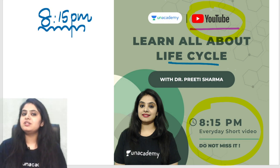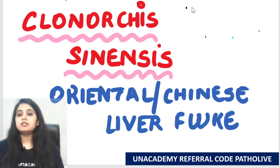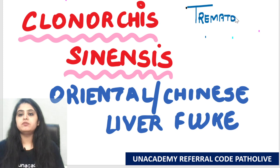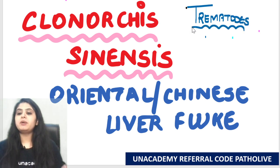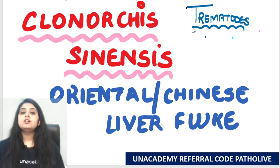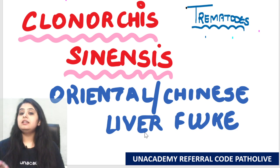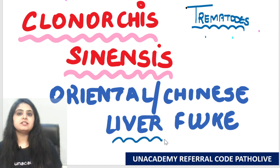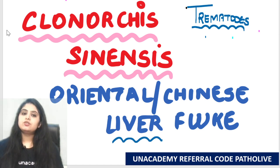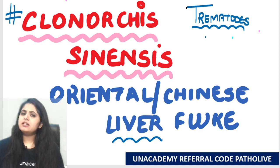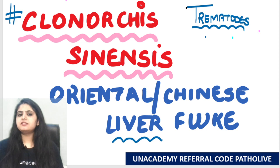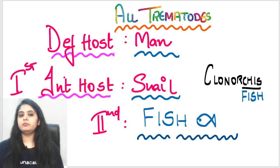Do you remember what we studied yesterday? Yesterday we started with the family of the trematodes and did one of the pulmonary or lung flukes, which was Paragonimus westermani. Today we are talking about the second one — the liver fluke. So we did the lung fluke yesterday; today we'll do the liver fluke and that is Clonorchis sinensis. I'll take it up from exactly where I left off yesterday.